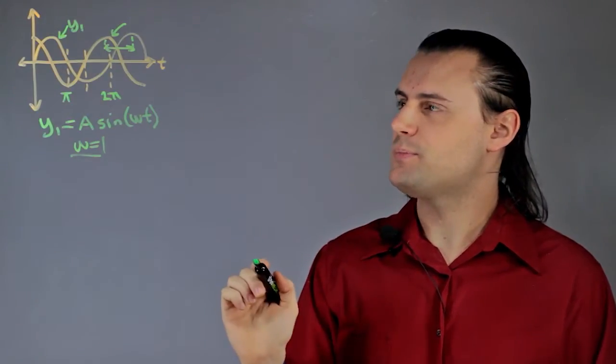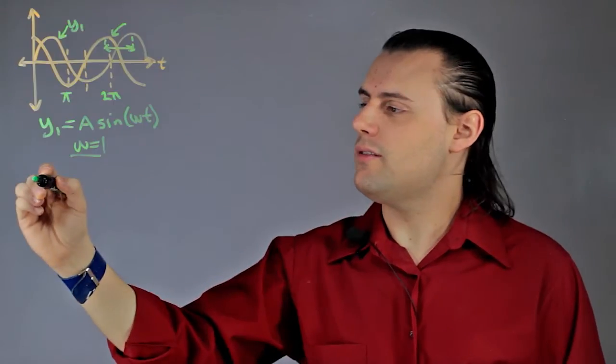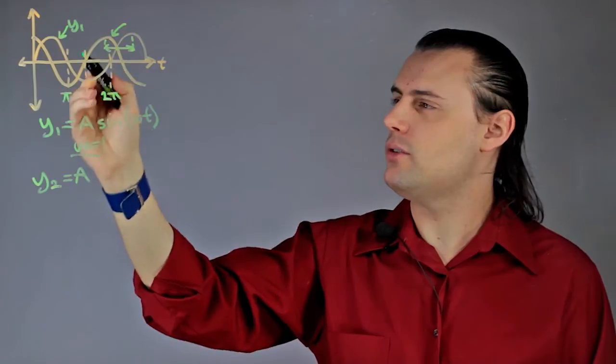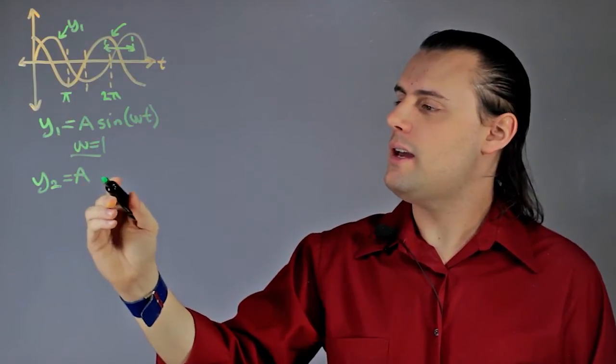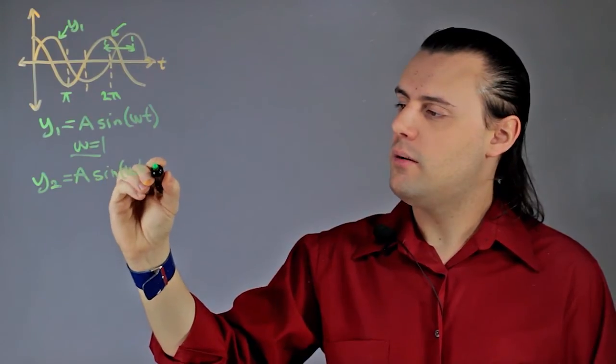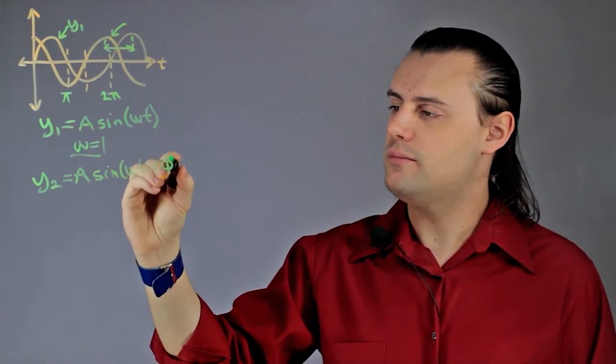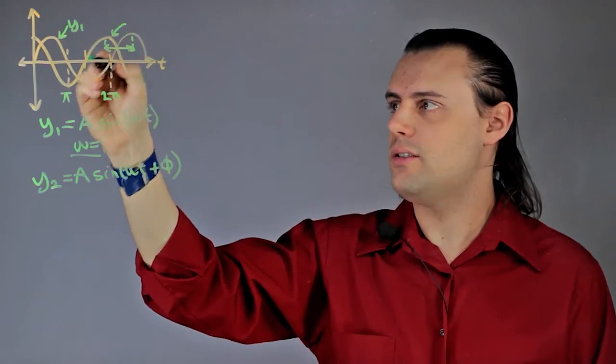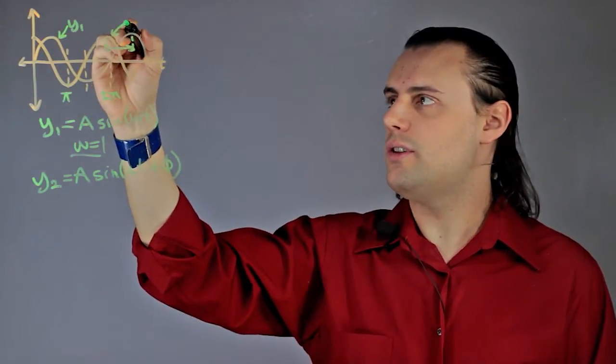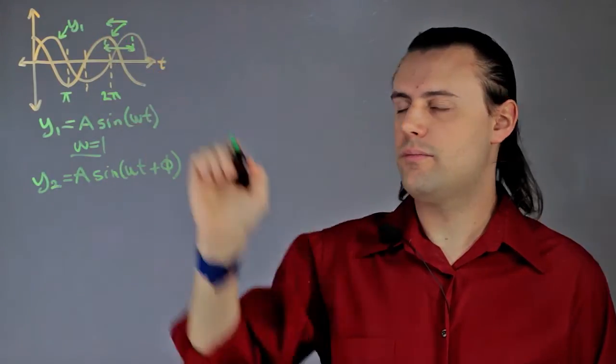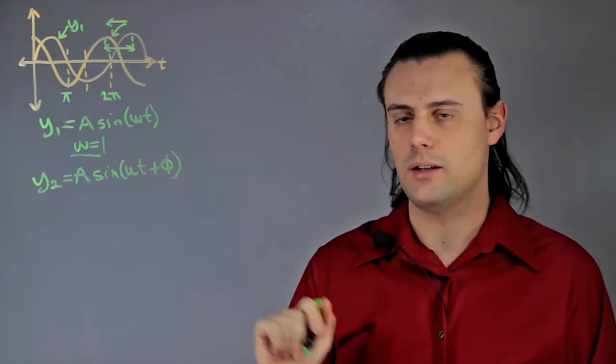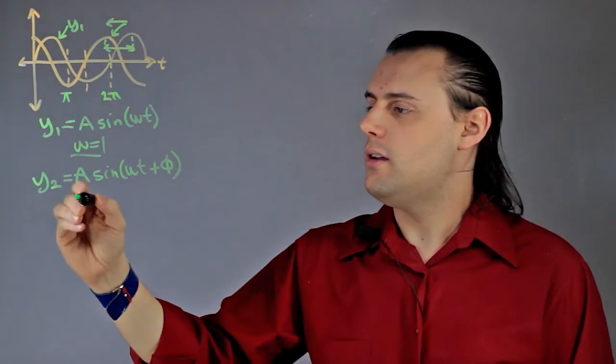Now my second function I can write, assuming that it's the same amplitude, as A sine ωt plus a phase difference - plus because the phase difference of this second signal is offset to the left of the original signal. If it was offset to the right, then I would be writing minus φ.